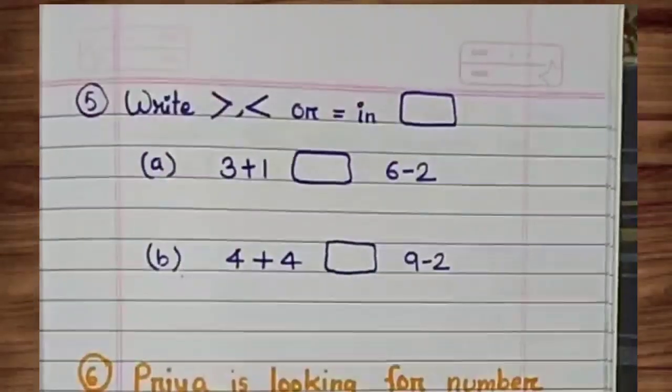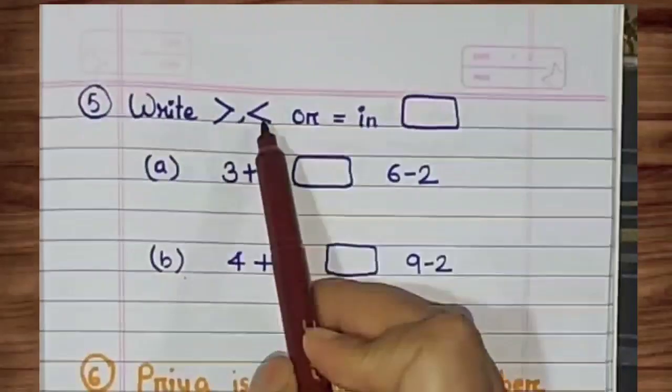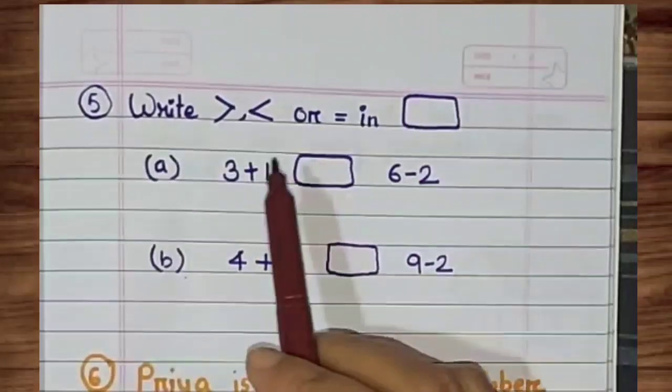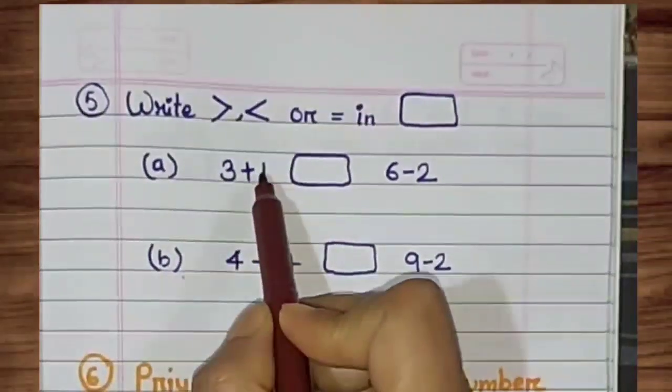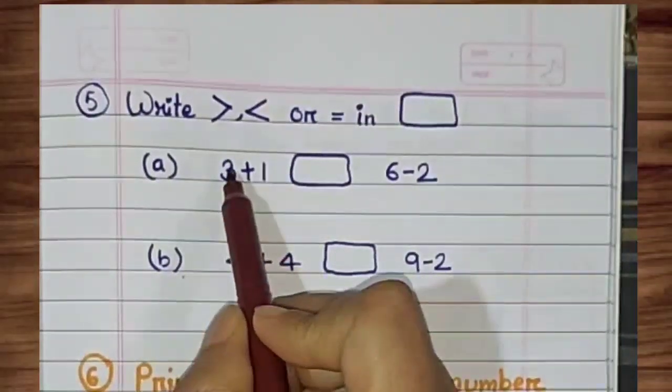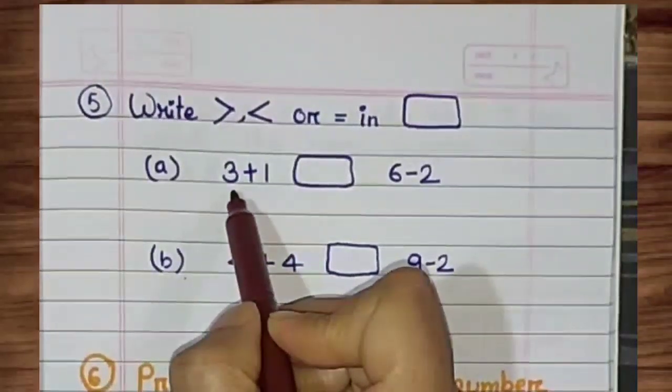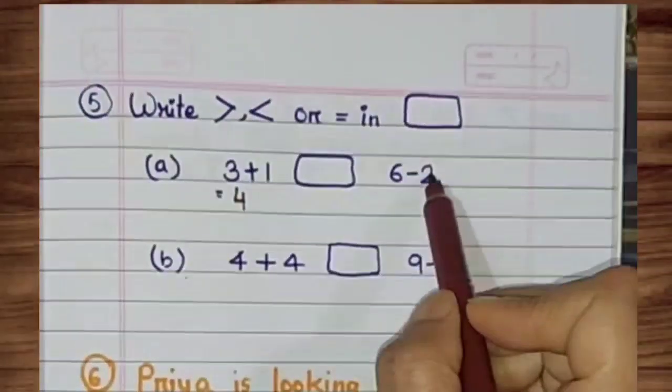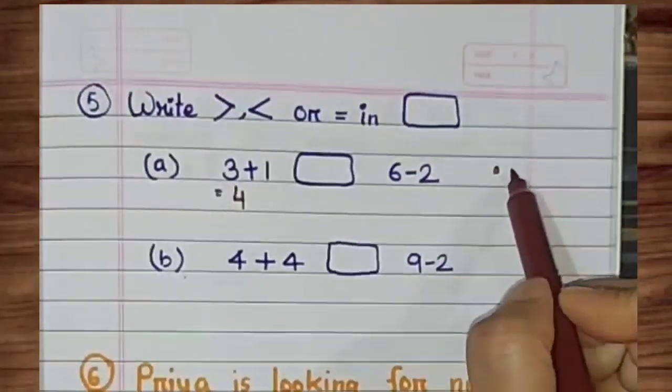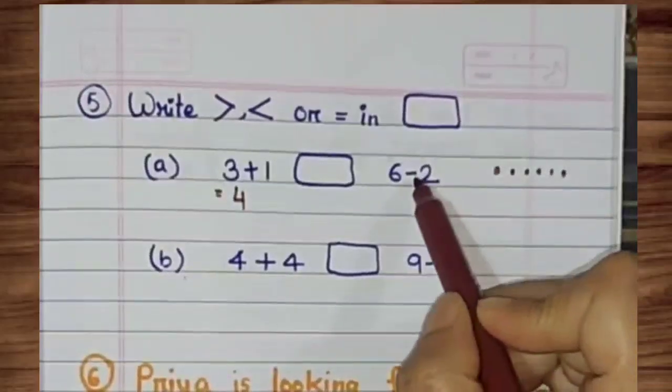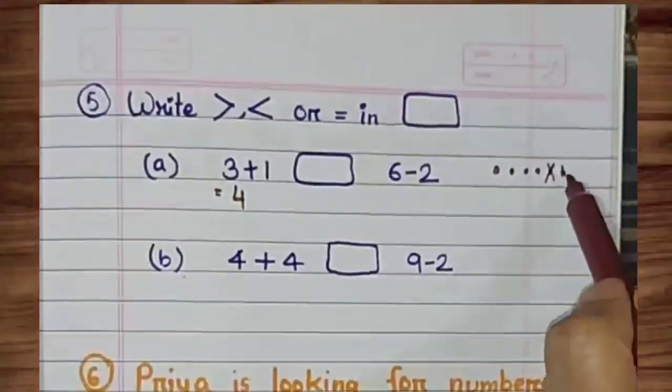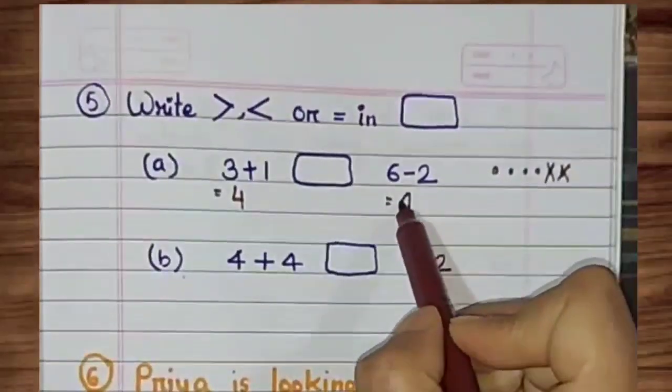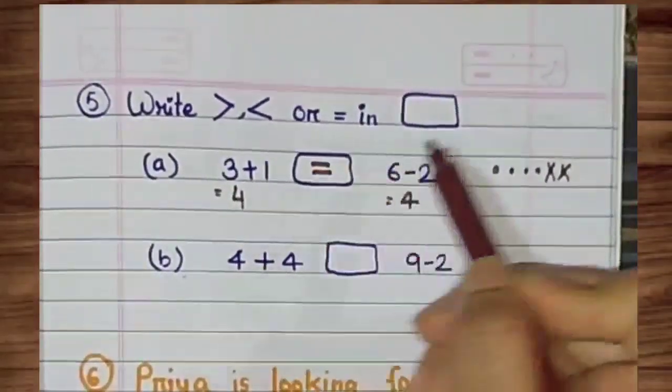Find out greater, less, or equal. First, number 1. Calculate the number 3 plus 1. That means 3 plus 1 equals 4. And 6 minus 2. By giving the dots and 2 number cross. Then count the number. Remaining number is 4. 4 and 4 are equal.